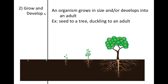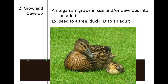All living organisms grow and develop. An organism will grow in size, or it may develop into an adult even if it doesn't appear to get bigger. For example, here we have a seed that grows into a tree, and we also have a duckling that will eventually become an adult that looks like this.